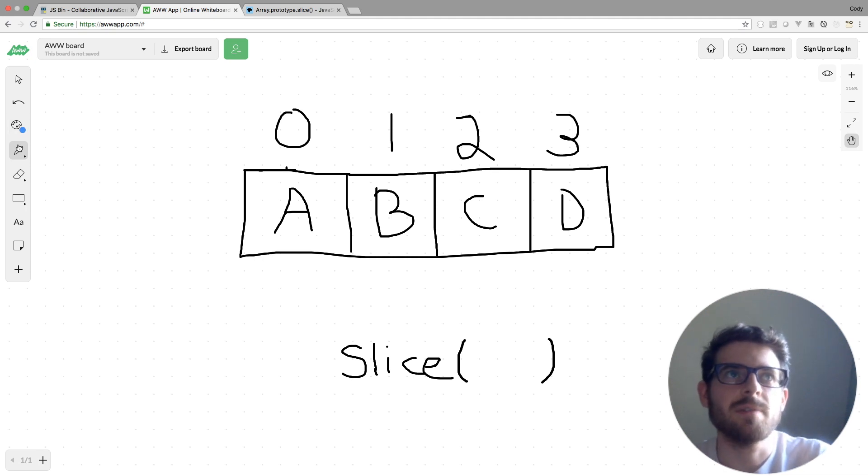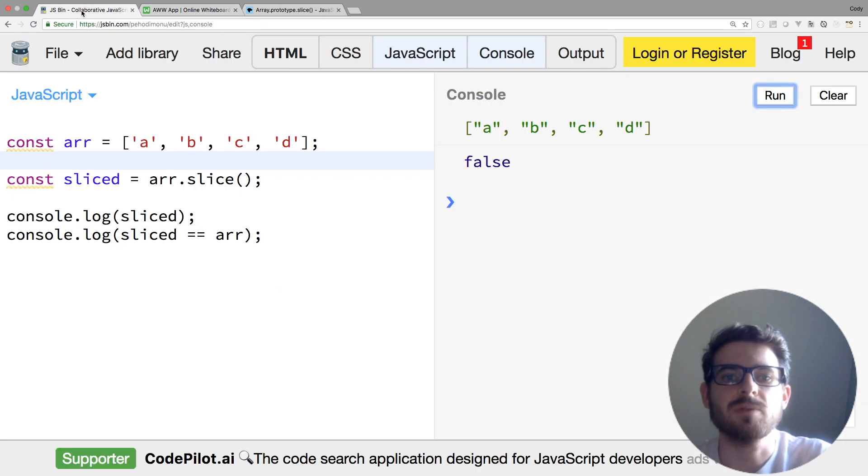For the first example, if you were to call slice with no arguments, because both arguments are optional, this is going to return us a shallow copy of the entire array. Basically, this is saying give us starting index at zero, and end index will be at the length. To demonstrate that, I'm going to move over to JS bin where I have a little code snippet ready to go, and I'm going to run this code.